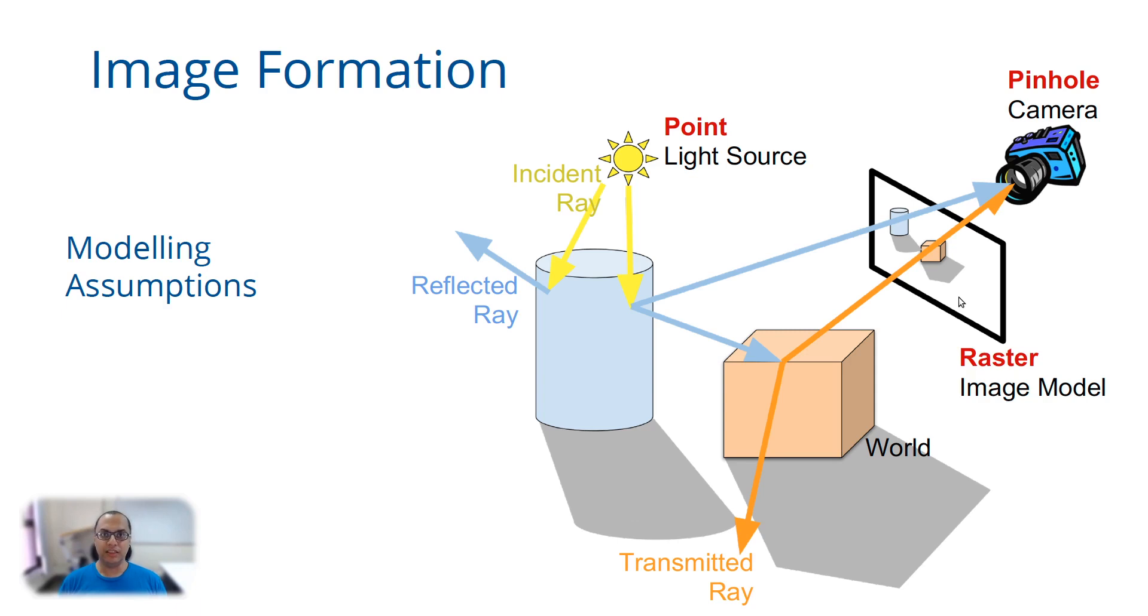The third modeling assumption that we are going to make is that we have a raster image model. I am just going to follow up in the subsequent lectures about what is a raster image model. It basically means that our image is made up of these discrete raster elements which we tend to call pixels in common language. It is made up of a discrete set of points.